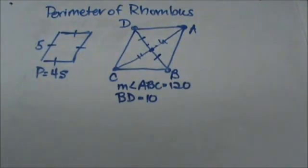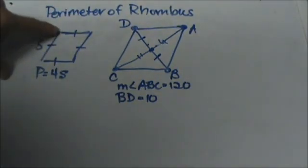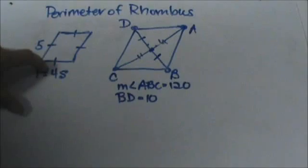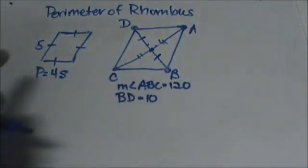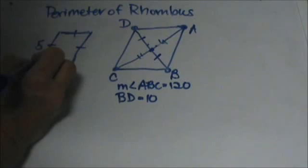A rhombus is what I consider a squished square. A square has all four sides congruent and a rhombus is similar. They're in the same family, yet they're different figures. They're both quadrilaterals. A square has right angles at the vertices and a rhombus doesn't necessarily have to have right angles at the corners.